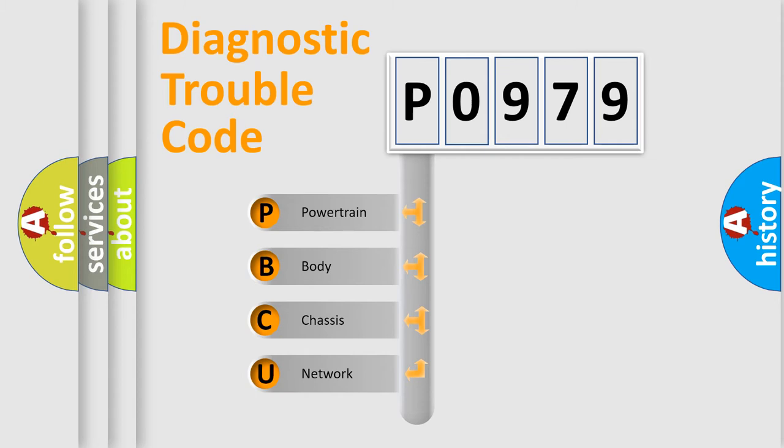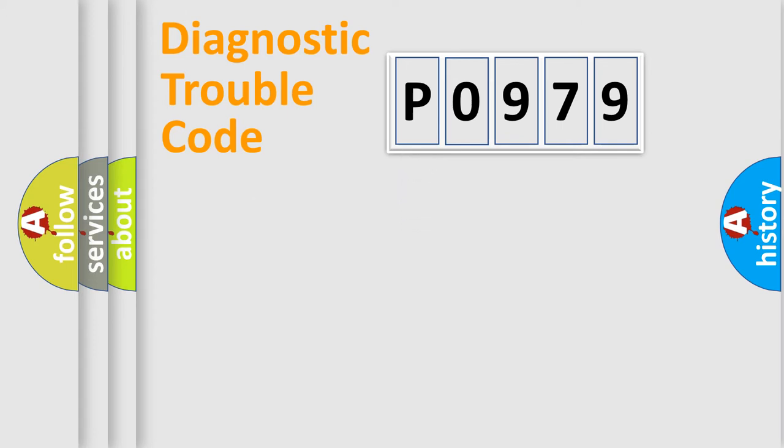We divide the electric system of the automobile into four basic units: powertrain, body, chassis, and network.